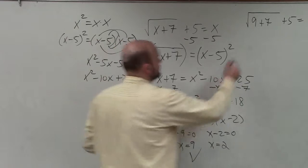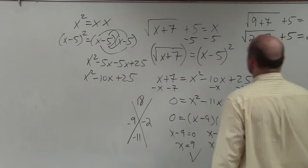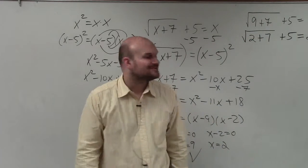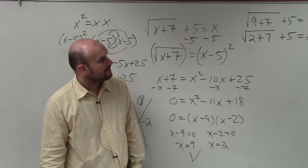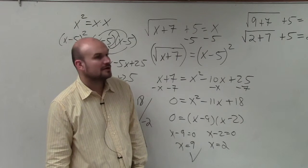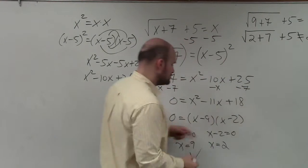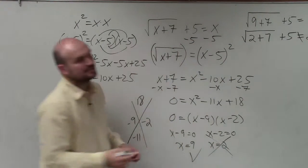Now let's do 2. 2 plus 7 is 9. The square root of 9 is 3. 3 plus 5 is 8, which does not equal 2. So therefore, 2 is not a solution.